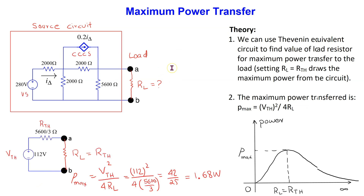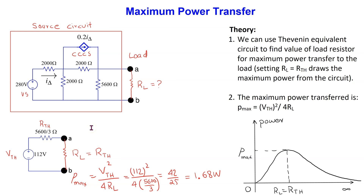For the given circuit of interest, it can be shown that the Thevenin equivalent circuit is as shown. The derivation of this result is available in another video in this channel. The link is provided at the end of the video. Using the Thevenin equivalent circuit and setting RL equal to R Thevenin, it can be shown that the maximum power transferred in this case is 1.68 watts.